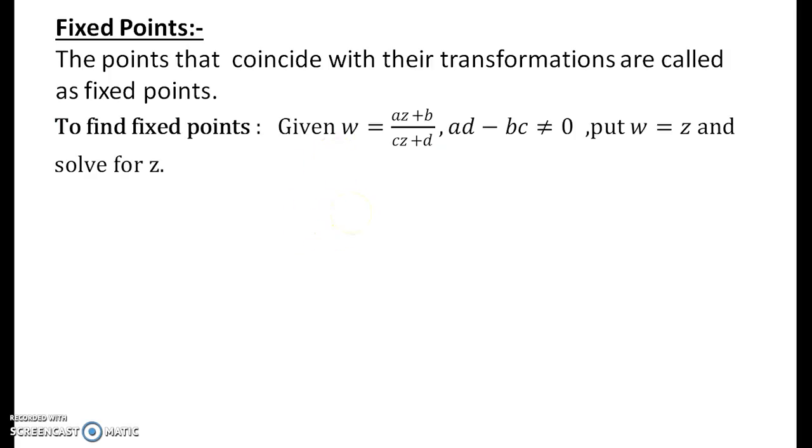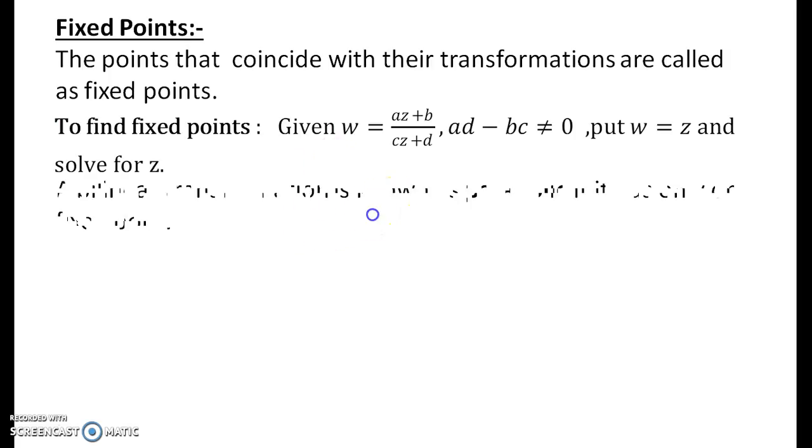Depending upon the nature of the fixed points you have a property. One of the properties that a bilinear transformation is known as parabolic if it has only one fixed point.